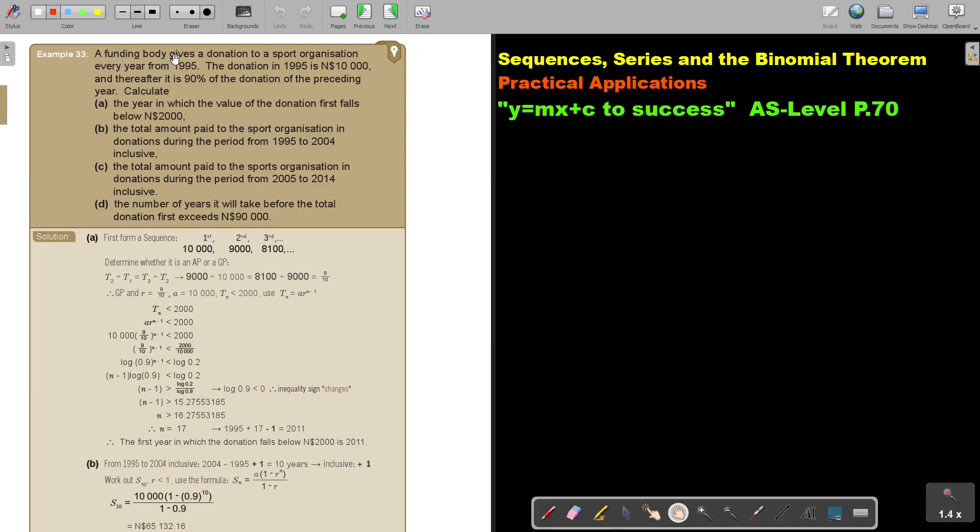A funding body gives a donation to a sport organization every year from 1995. The donation in 1995 is 10,000 and thereafter it is 90% of the donation of the preceding year. Calculate the year in which the value of the donation first falls below 2,000.